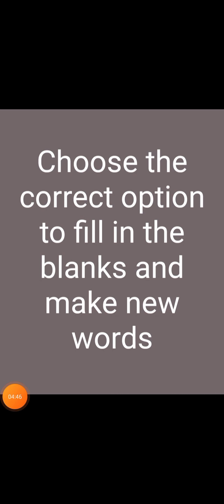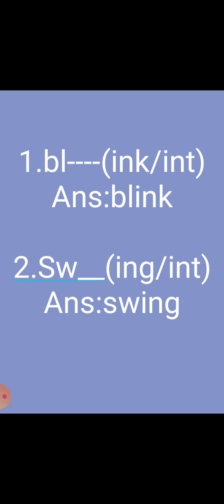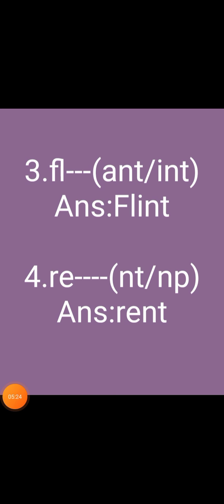Choose the correct option to fill in the blanks and make new words. First one: bl + (ink or int) — correct option is ink, so the answer is blink, B-L-I-N-K. Second one: sw + (ink or int) — answer is swing, S-W-I-N-G. Third one: fl + (ink or int) — answer is flint, F-L-I-N-T.